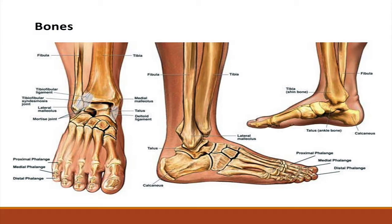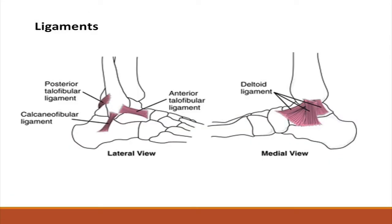Articular cartilage covers all these joint surfaces. Ligaments surrounding the ankle joint play an important role in providing stability. On the medial side, the medial ligament is made up of four separate ligaments which fan out from the malleolus, attaching to the talus, calcaneus and navicular bones.